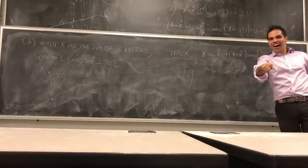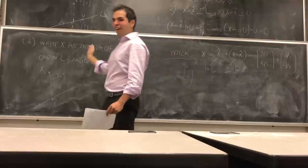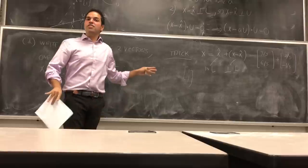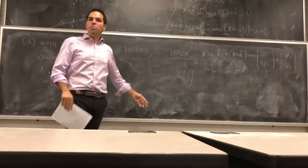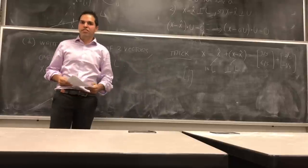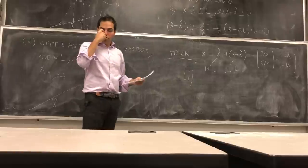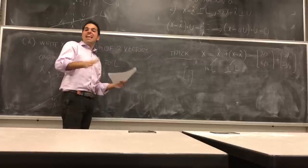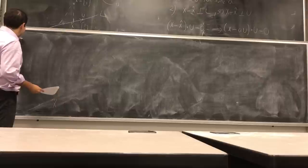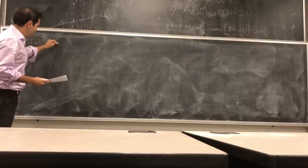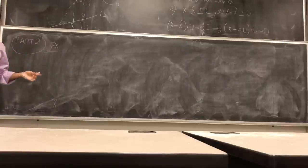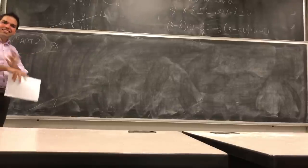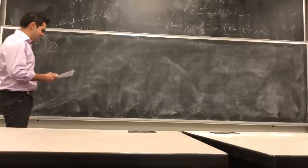So far we did orthogonal projection on a line, but there's nothing special about that line. You can actually do orthogonal projections on more general subspaces. Just to illustrate that, let's do an orthogonal projection on a plane — and you'll see it's plain simple. Part two: the same thing as before but with more general subspaces. You'll see it's exactly the same thing, which I think makes linear algebra so beautiful — you can easily generalize things.